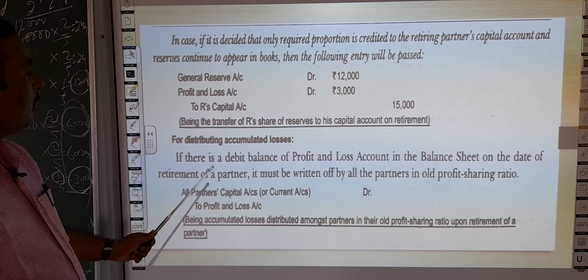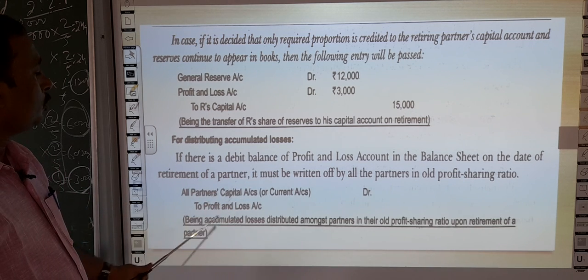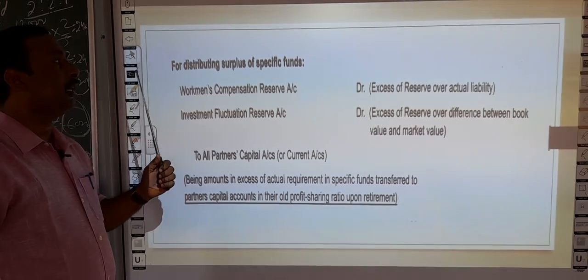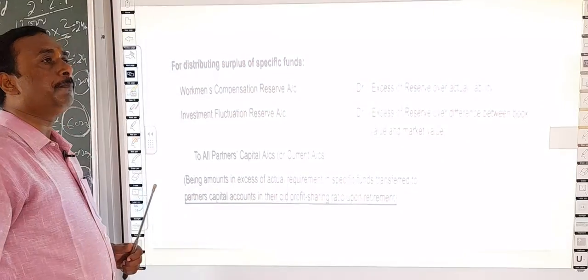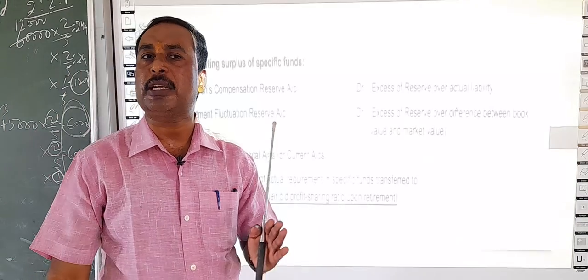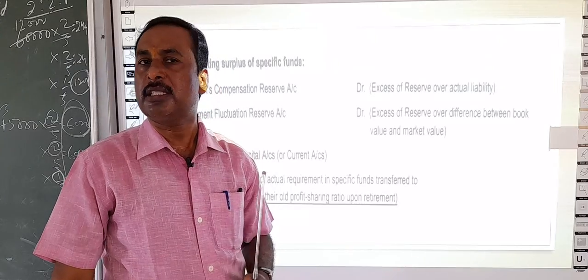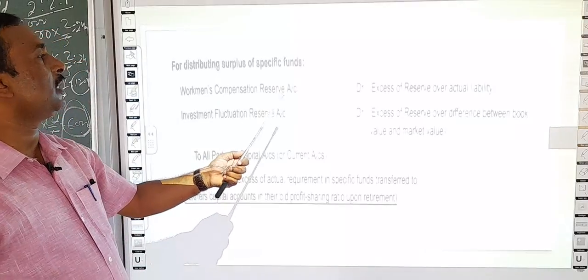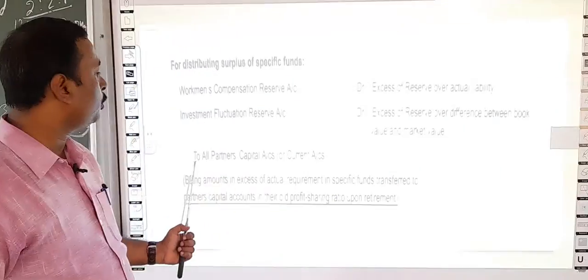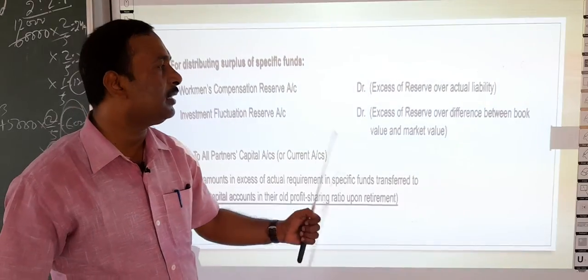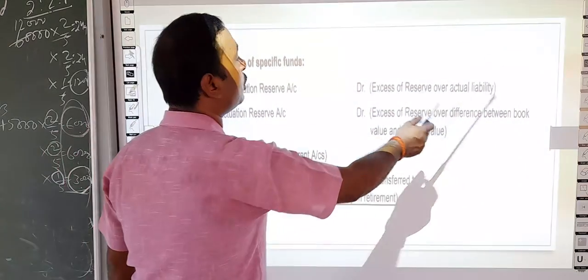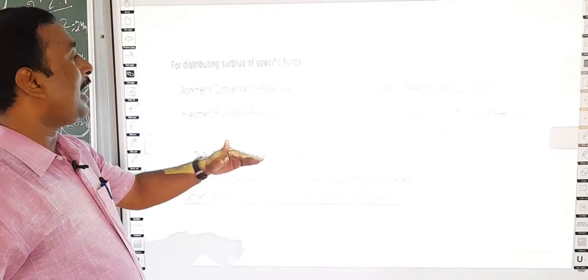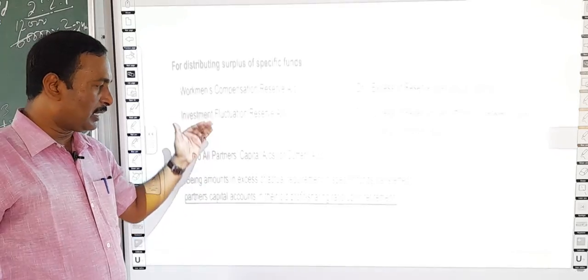It is a reverse entry. If the Profit and Loss account shows a debit balance, then all partners' capital or current accounts are debited to Profit and Loss account. For reserves such as Workman Compensation Reserve and Investment Fluctuation Reserve — whatever their surplus balance — in that case you will do: Workman Compensation Reserve Account debit, Investment Fluctuation Reserve Account debit, to all partners' capital or current account, for the excess of reserves over actual liabilities and the excess over the difference between book value and market value.